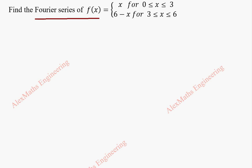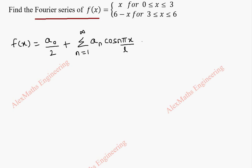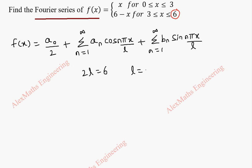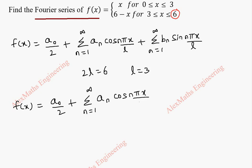As a first part, we are going to write the formula for the Fourier series, which is f of x equal to a0 by 2 plus summation n equal to 1 to infinity an cos n pi x by l plus summation n equal to 1 to infinity bn sin n pi x by l. Here, the value of 2l is 6, which means l is equal to 3. Now, replacing 3 in the above formula, we get f of x as a0 by 2 plus summation n equal to 1 to infinity an cos n pi x by 3 plus summation n equal to 1 to infinity bn sin n pi x by 3.